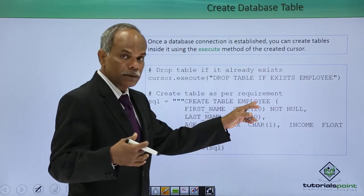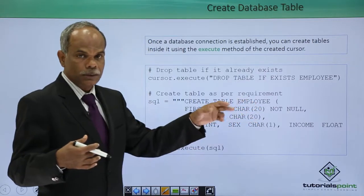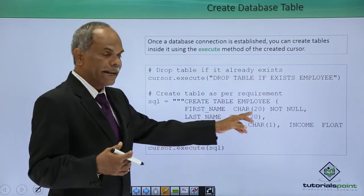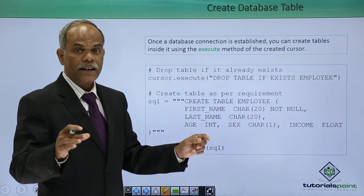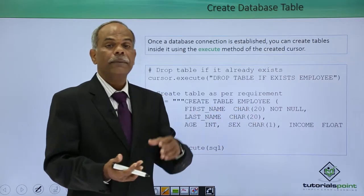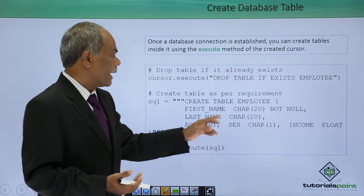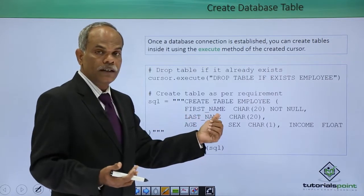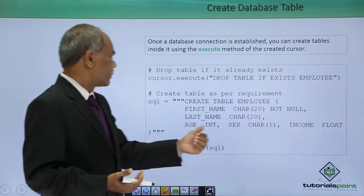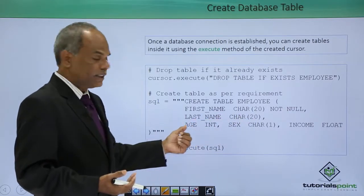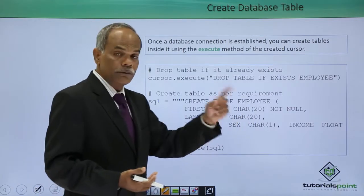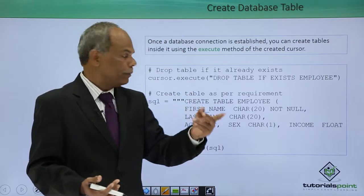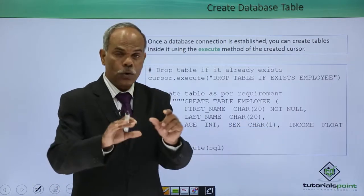For instance, the employee table is supposed to contain: first name, whose type is CHAR(20) — the char is a data type in SQL — and it cannot be null. Last name is CHAR(20). Age is INTEGER. Sex is CHAR(1) because we intend to store M or F for male or female. And income is the FLOAT data type.